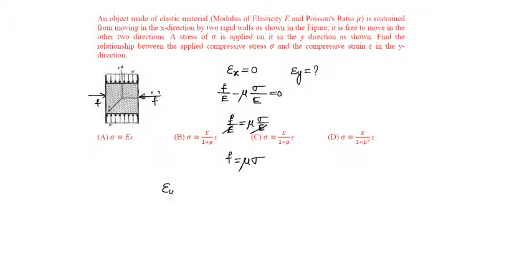So the strain in y direction will be equal to sigma by E minus mu into f by E. We know f is obtained as minus mu into mu into sigma by epsilon, that is equal to sigma into 1 minus mu square by E.